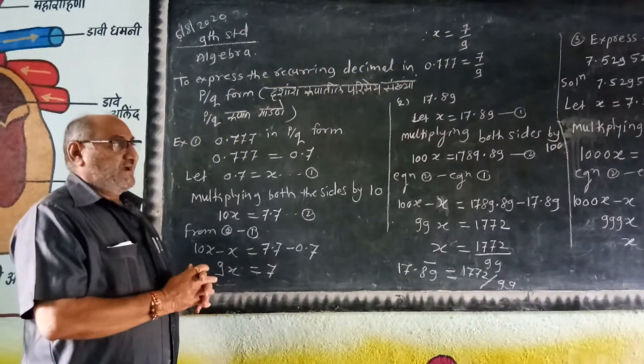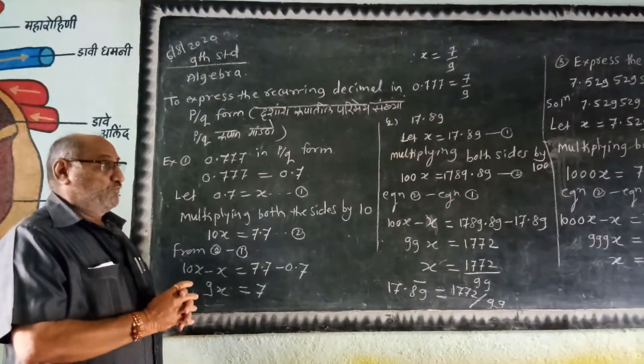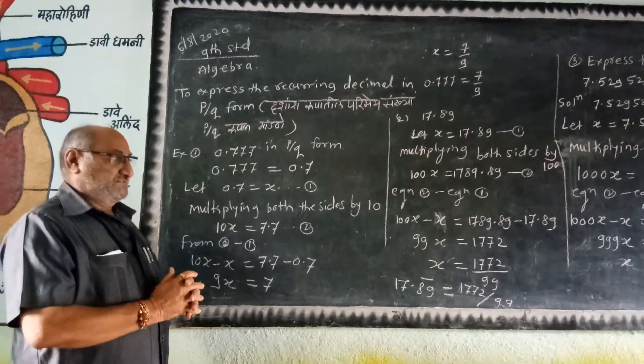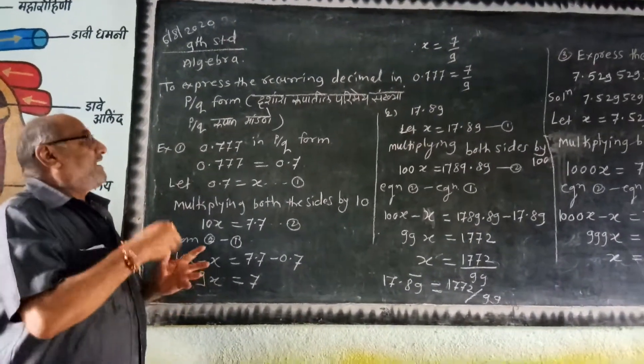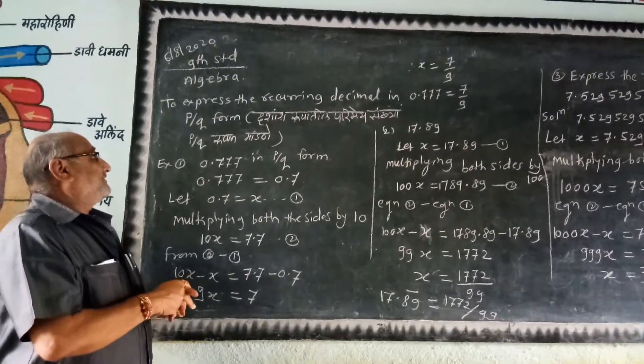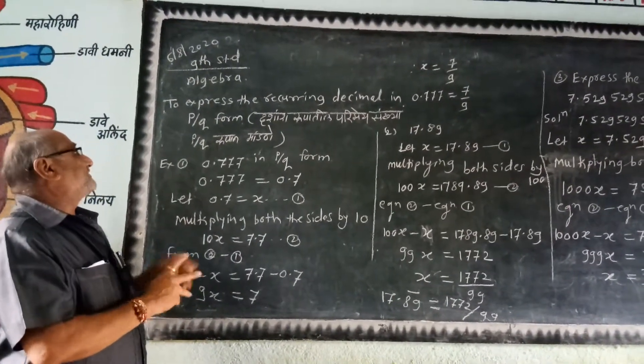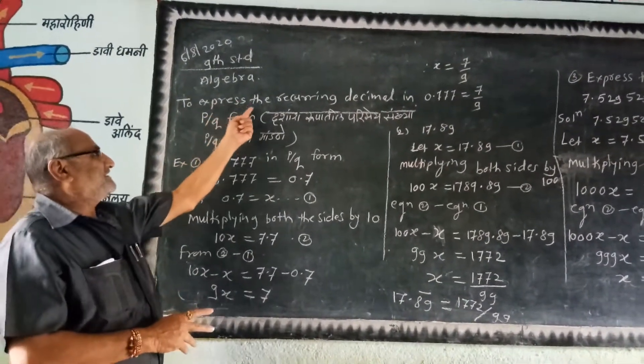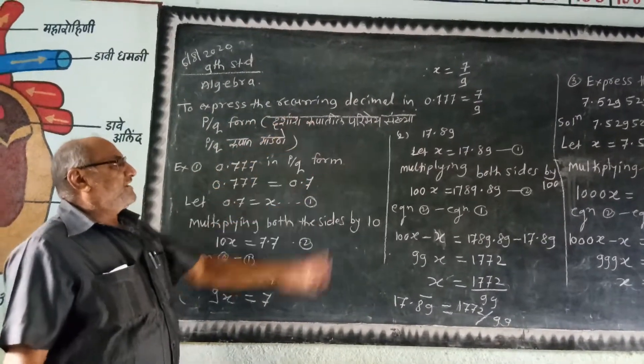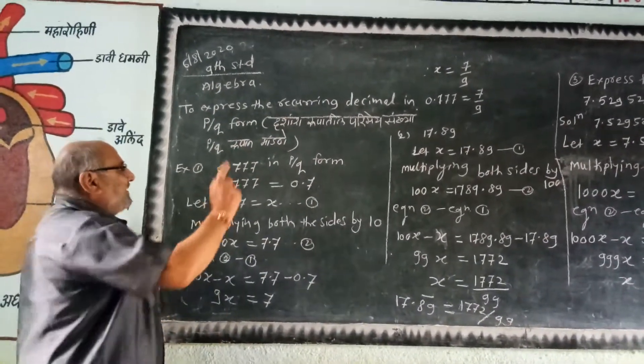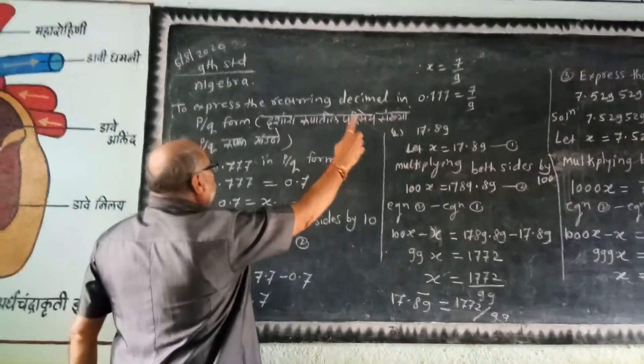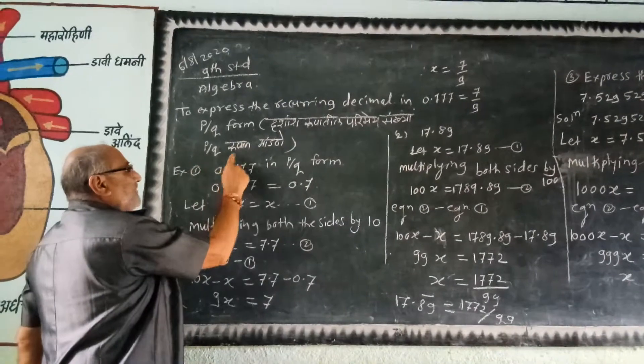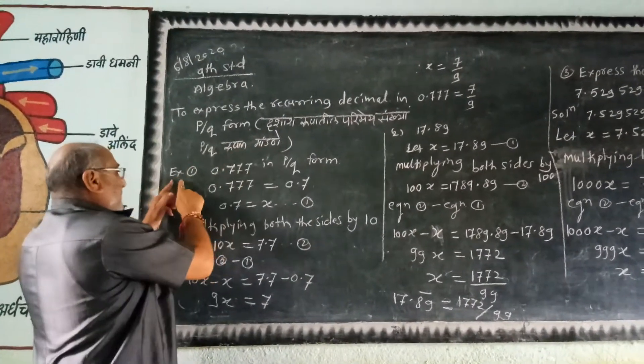Yesterday I started Chapter 2, Real Numbers, and today I start the pre-evolumetric forms to express the recurring decimal in p/q form. Let's see an example.